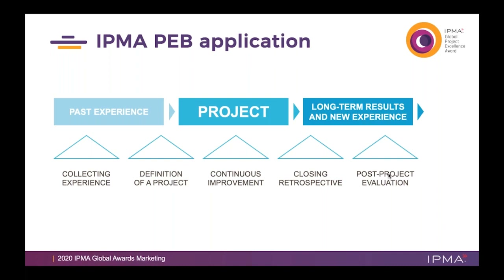We see companies that use simplified excerpts of the model throughout the project for continuous improvement — for example, on regular project retrospectives, every month or a quarter. We also saw some companies doing this at the project manager level, not only looking at the project itself, but also looking at various projects that a given project manager runs, to assess the performance of the manager in the same areas as a single project. And many companies use PEB at the closing retrospective, just to have a complete view on what happened and to learn for the future.